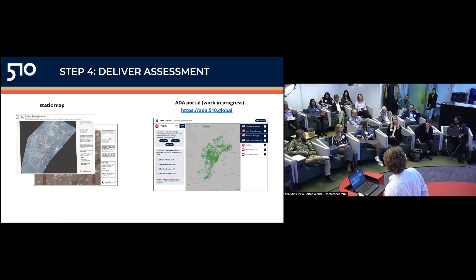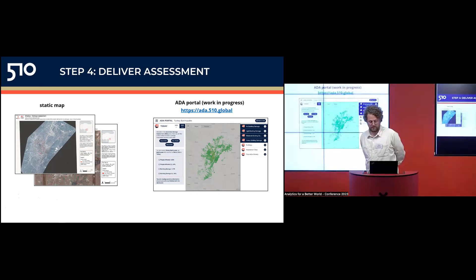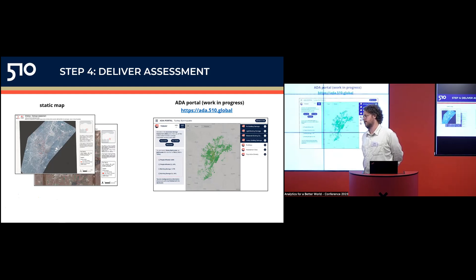Audience question: Is it possible to also assess damage to roads, which is very important for relief operations? I'm not familiar with any literature specifically on road damage assessment from satellite imagery. It all depends on whether there is labeled data for it. I wouldn't see why a similar approach couldn't work, but I'm not familiar with existing work on this. It would certainly be interesting to eventually make the scope a bit bigger, since the state of infrastructure is so crucial in disaster response.